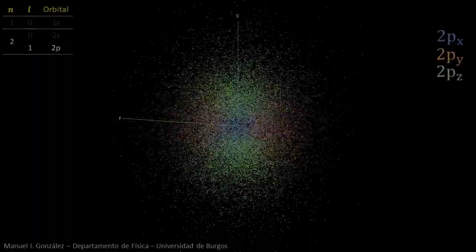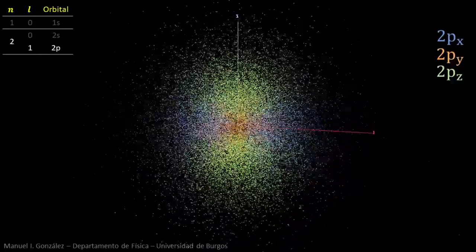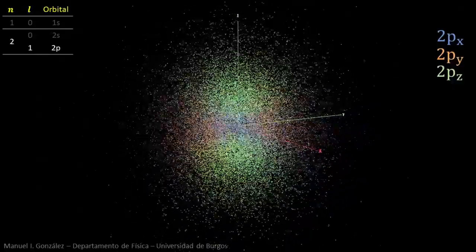If we display all three orbitals at the same time, the complete electronic cloud becomes somewhat confusing, but shows a high degree of symmetry.